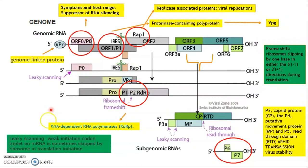Due to leaky scanning, ribosomes skip certain codons and translate others, producing multiple protein products from the same ORF region. To summarize: PLRV's genome has 10 ORFs, each coding for a different protein. For example, ORF0 codes for P0, which suppresses RNA silencing and is a determinant of symptom and host range. Each ORF encodes a protein with a distinct function.